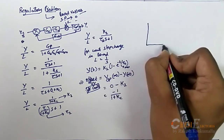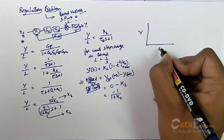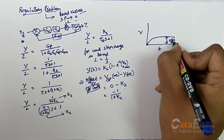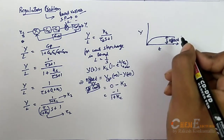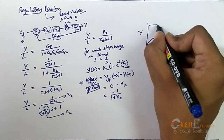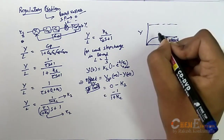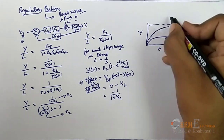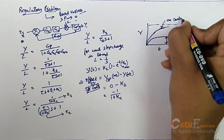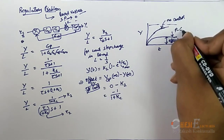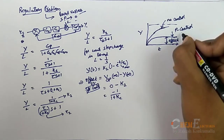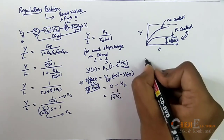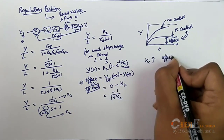The output response with respect to time shows the offset as the difference between the setpoint and the final output response value. If there is no control at all — open loop — for any change in load the output response keeps increasing. With a P-controller there is a controlled response with some amount of offset. From this again we can conclude that as Kc increases, offset decreases.